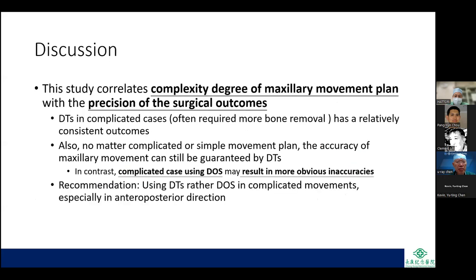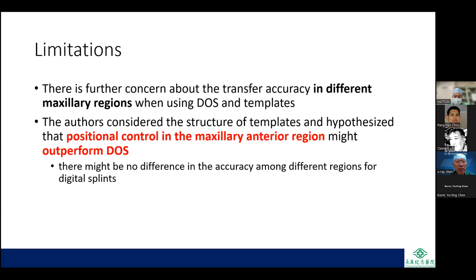This study correlates the complexity of the maxillary movement plan with the precision of surgical outcomes. For the template group in complicated cases — which also often require more bony removal — outcomes were relatively consistent. Regardless of complexity, the accuracy of maxillary movement can be guaranteed by templates. In contrast, complicated cases using splints may result in more obvious inaccuracies. The recommendation was to use templates rather than splints in complicated movements, especially in the anterior-posterior direction (Y-axis).